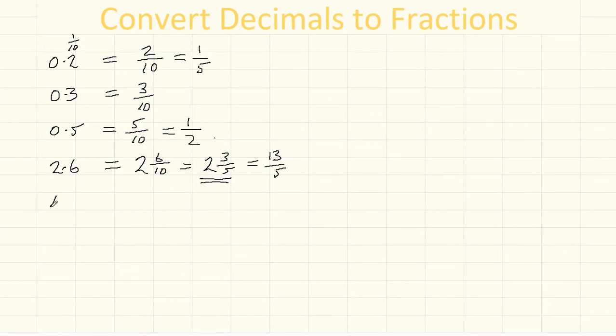Let's try this one, 14.8. Again, keep the 14. You've then got 8 tenths. So that equals 14 and 4 fifths, because you're dividing this and this by 2. And that's our final answer.